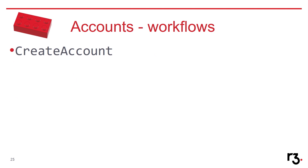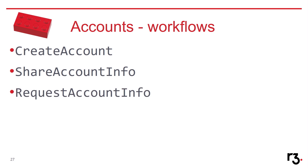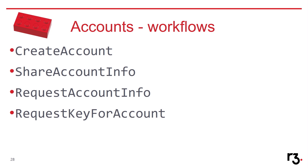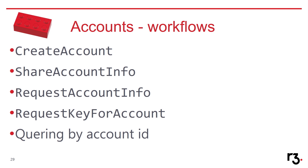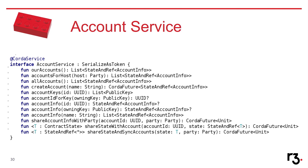We ship this CorDapp with lots of workflows. You can create an account, share account info with another node, request account info from another node knowing the ID. You actually have to request a key for an account, because account info doesn't have information about keys. Every time you want to transact with an account, you have to do a flow similar to confidential identities — request a new key and put it into the transaction. We also introduced a special way of querying the vault so it only shows you the subset of states that belong to the account. It's hidden behind account service, but there are also initiating flows for this.